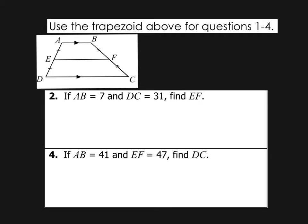So as we roll right into the notes, it says use this trapezoid for questions one through four. So here we are at number two. If AB is equal to seven, and DC is equal to 31, then find the length of EF. Well, EF is equal to AB plus DC divided by two, which is equal to seven plus 31, divided by two. Well, 31 plus seven is 38, and half of 38 is 19. So EF must be worth 19.